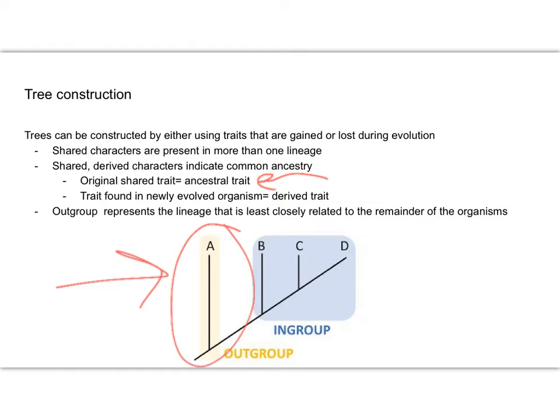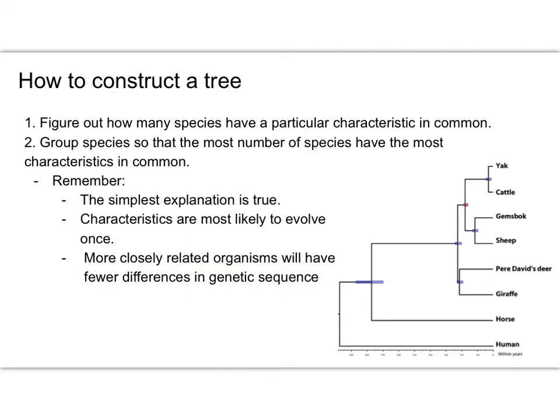Our first step when constructing a tree would be to figure out how many species have a particular characteristic in common, and we'll build from there. Then you're going to group species so that the most number of species have the most characteristics in common.